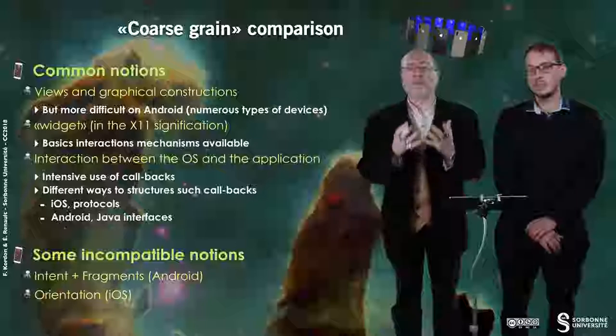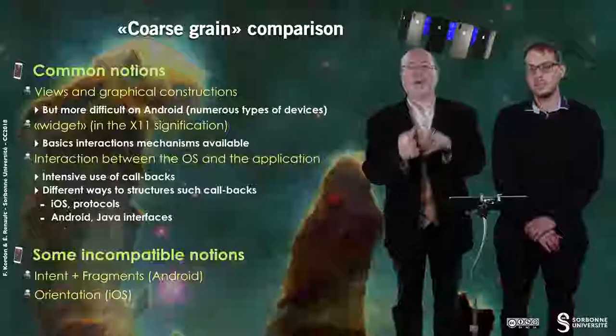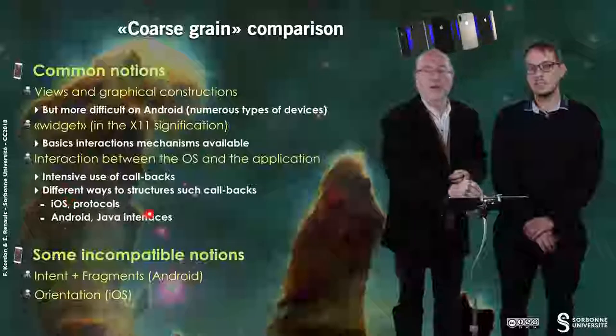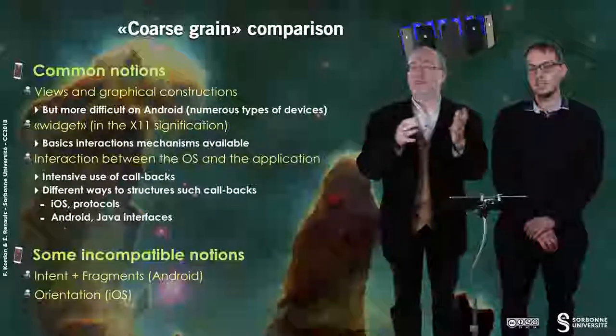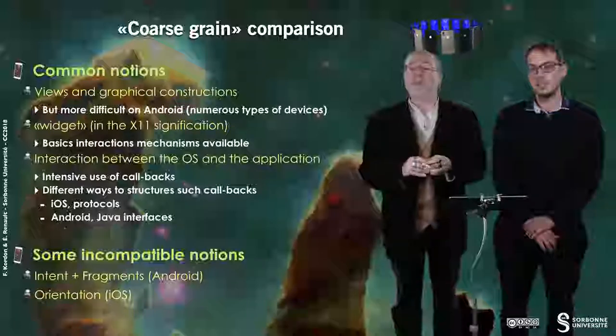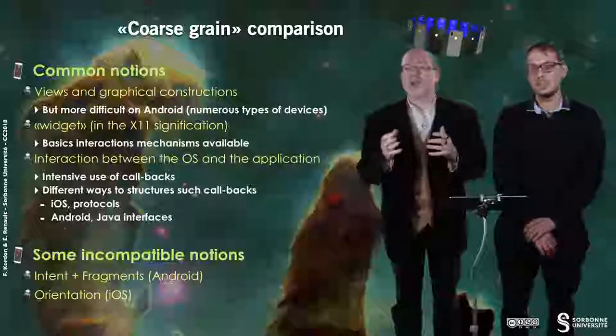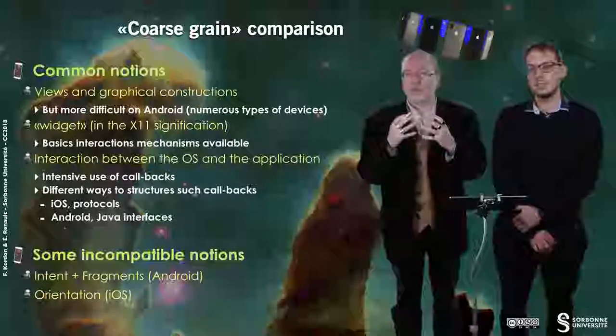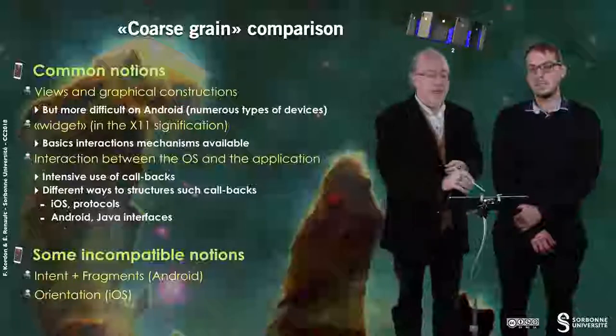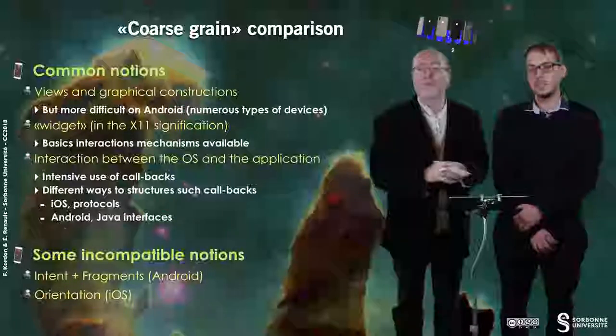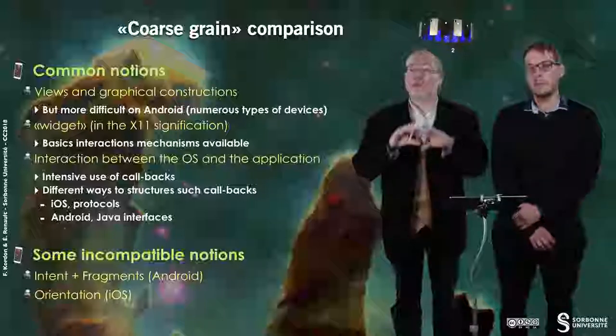You also have similar things about the interaction between the operating system and the application. Similar principle, for example, intensive use of callbacks and different ways to structure such callbacks. In iOS, you have this notion of protocols that was prepared for Objective-C and that is followed in Swift. And as Java is the main development language for Android, there is a use of Java interfaces for structuring these callbacks.